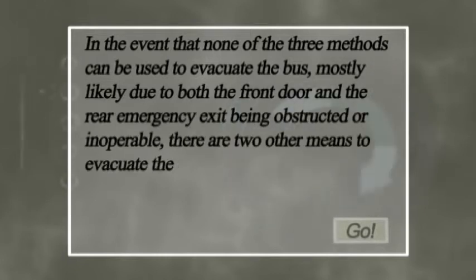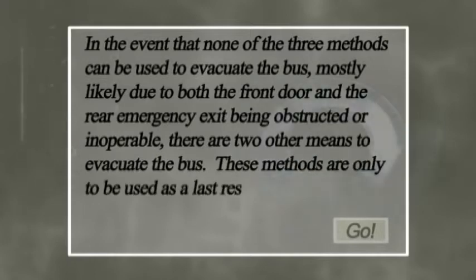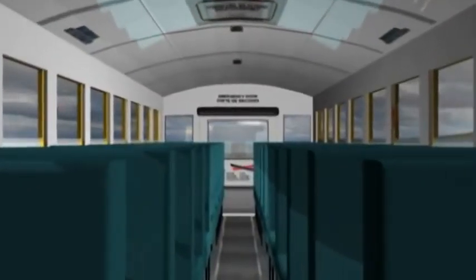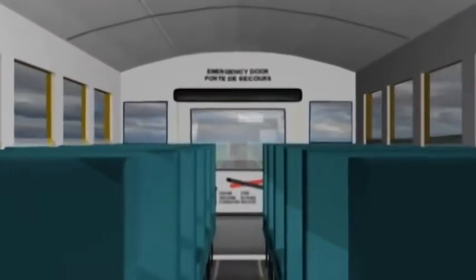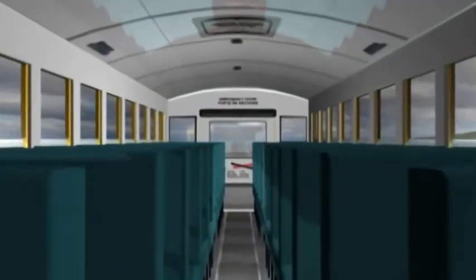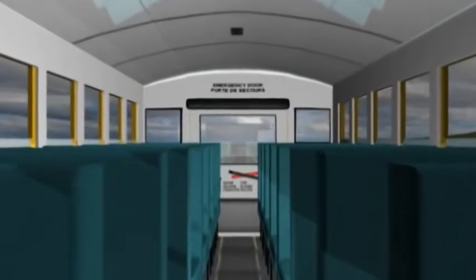In the event that none of the three methods can be used to evacuate the bus — most likely due to both the front door and the rear emergency exit being obstructed or inoperable — there are two other means to evacuate the bus. These methods are only to be used as a last resort. The first is the emergency window exit, which can be found on both sides of the bus. Each of these exits has a lever which must be pulled to release the lock on the window. The second is the roof emergency exit, which has a lever that must be turned in order to release the lock.